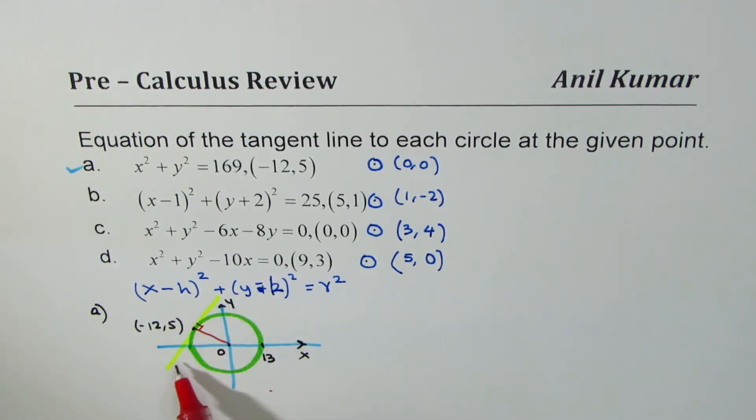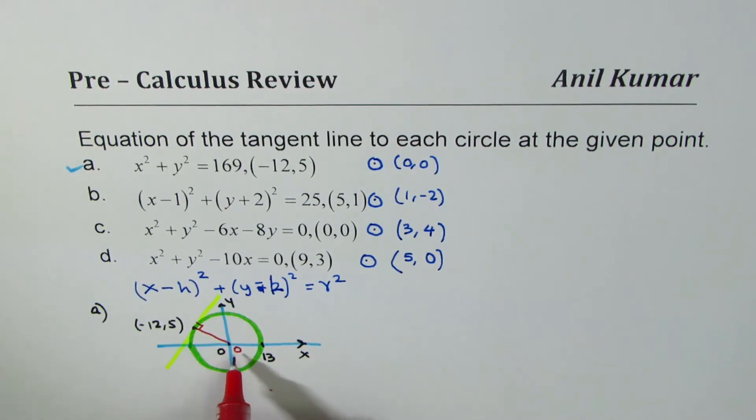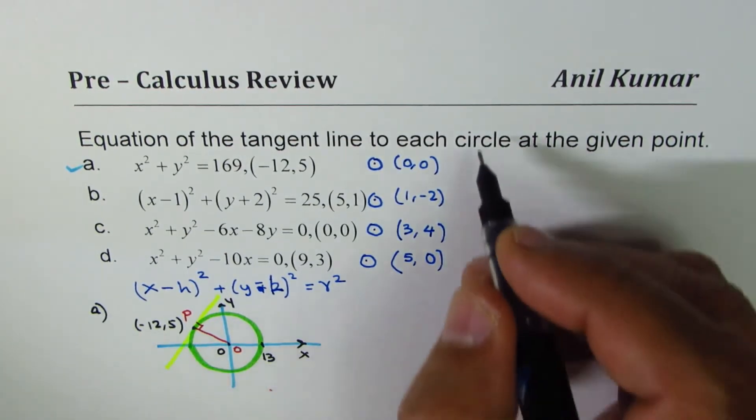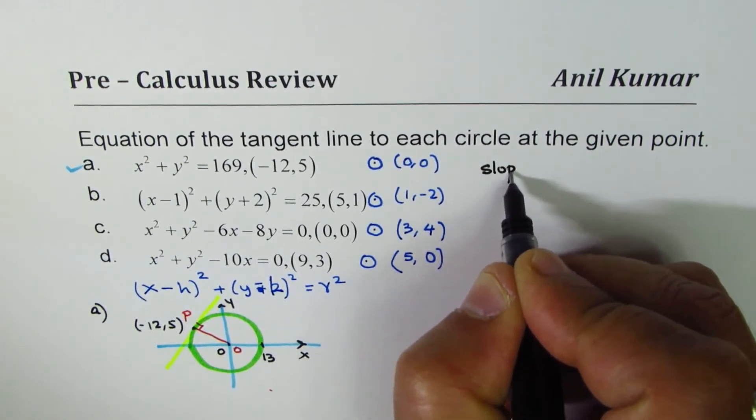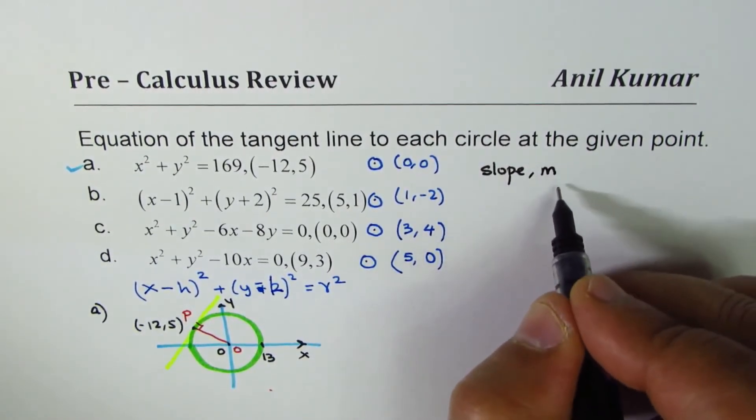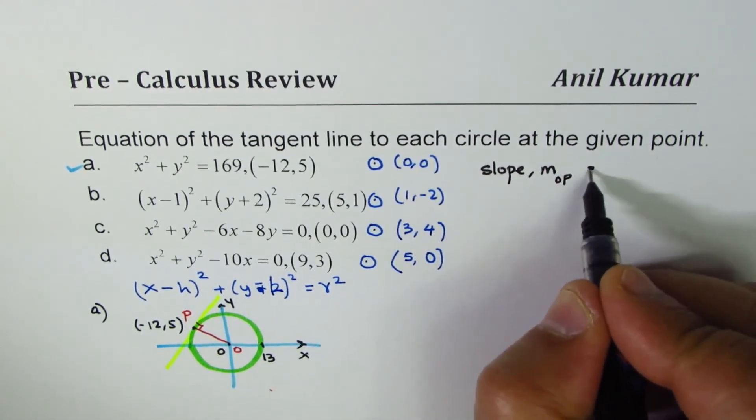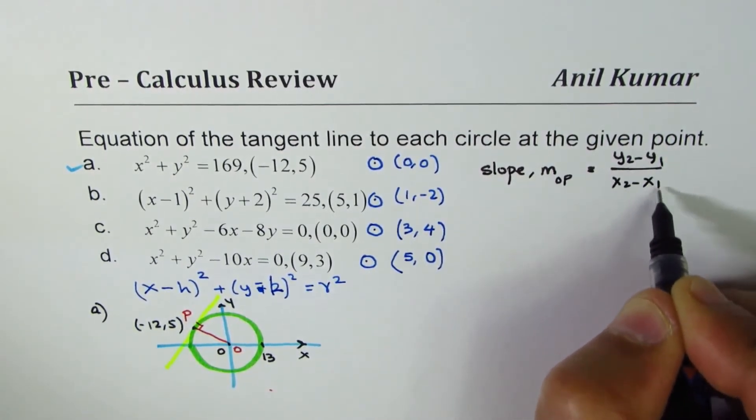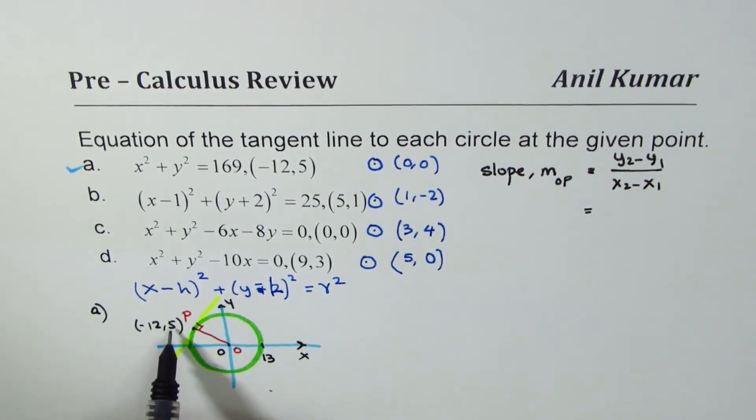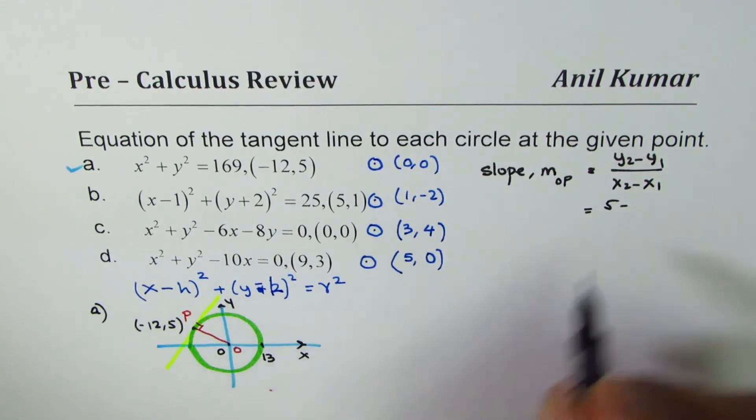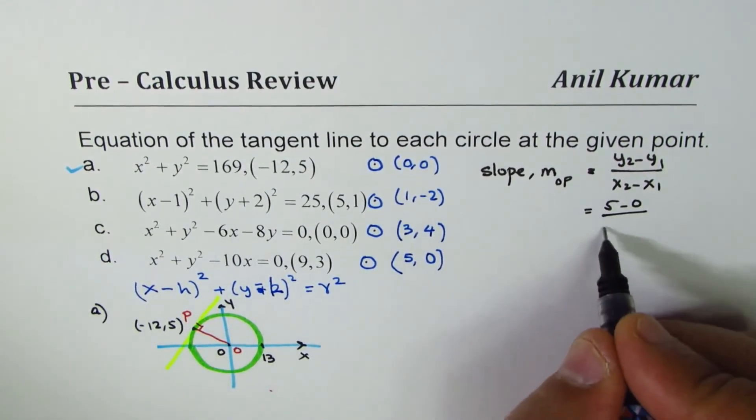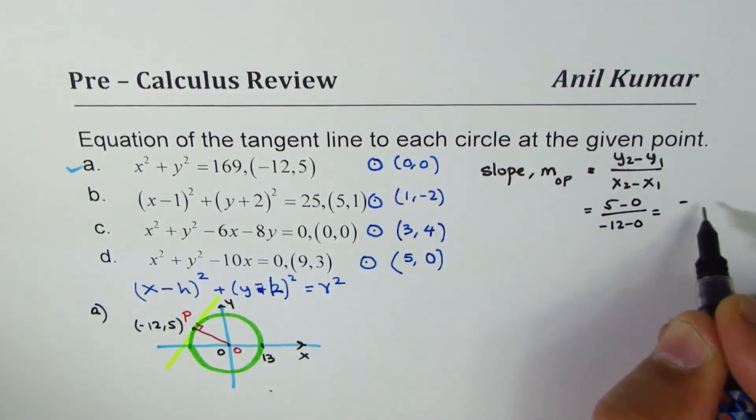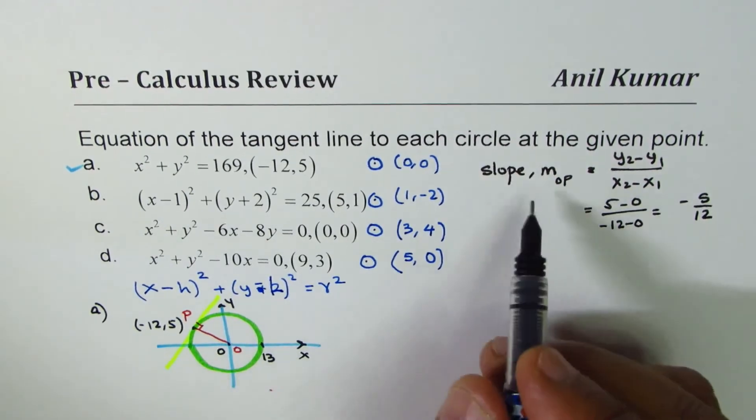So slope of the tangent will be negative reciprocal of the slope of the radius. So let's call this O and let's call this point as P. In the first step, let's find slope of OP. So slope, as you know, is (y₂-y₁)/(x₂-x₁). In our case, y₂ is 5, y₁ is 0 over x₂ is -12, x₁ is 0. So that gives us -5/12. So that is the slope of OP.